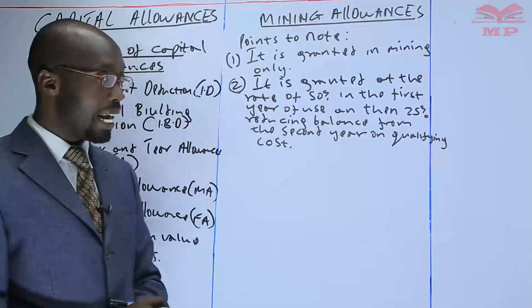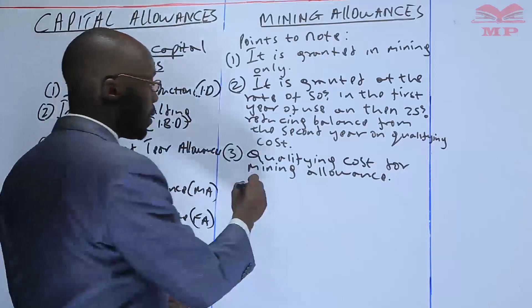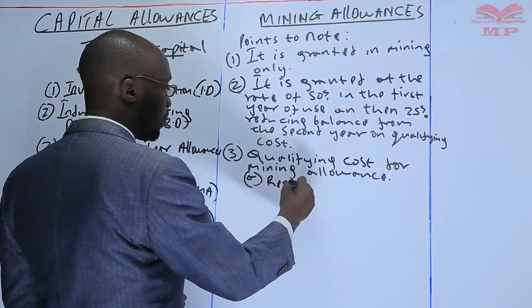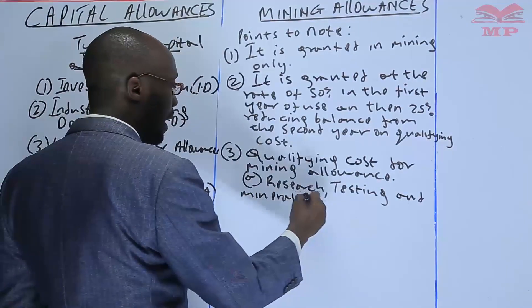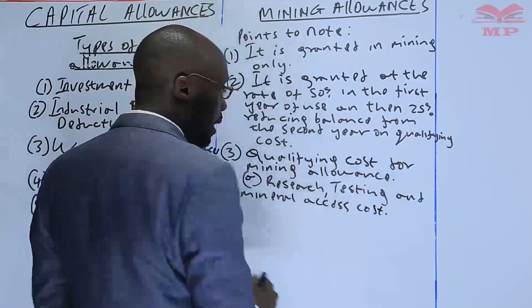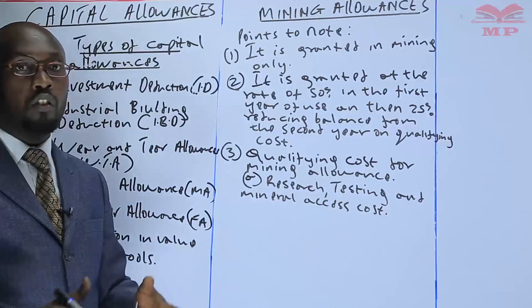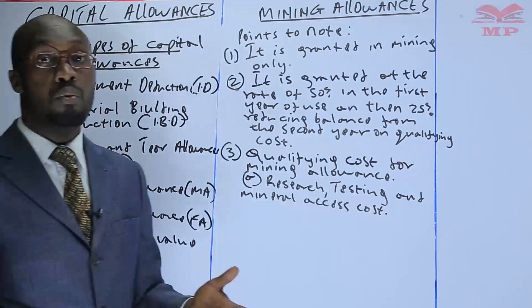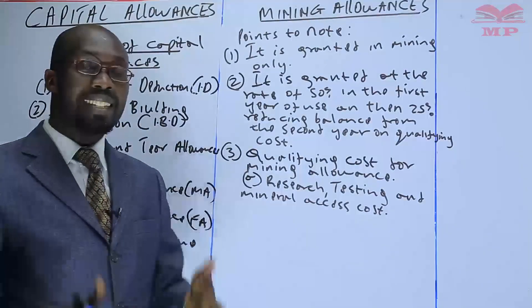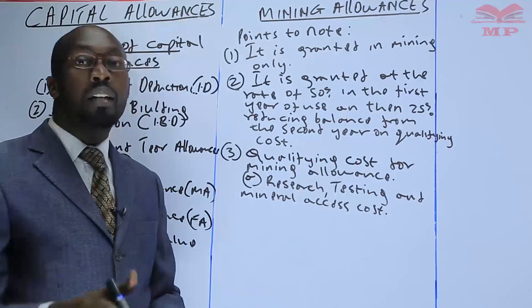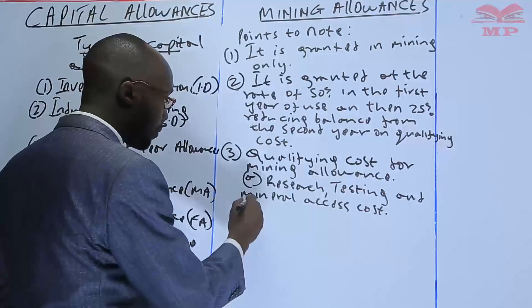Point three: qualifying costs for mining allowance. Number one is research and mineral access costs. In the process of mining, you may need to do research to know the quality and quantity of minerals deposited before you start mining. You may start mining and realize the deposit is too small and not viable. So you test for quality and access the minerals — for example, drilling a hole or well to access those minerals. All those costs normally qualify for the mining allowance.